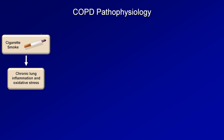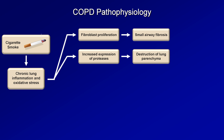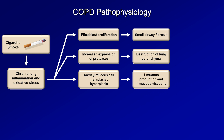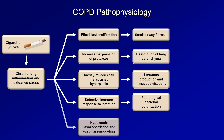First, there is proliferation of fibroblasts in the walls of the small airways — cells responsible for creating the extracellular matrix and structural protein collagen. When produced in excess, this leads to airway fibrosis and scarring. There is also increased expression of proteases, which destroy the lung parenchyma. Airway mucous cell metaplasia — in which mucous glands develop where they weren't previously present — and mucous cell hyperplasia, in which existing mucous glands increase in size, result in increased mucous production and viscosity. Defective immune response to infection leads to pathological bacterial colonization. Chronic hypoxemia leads to pulmonary vasoconstriction and vascular remodeling, resulting in pulmonary hypertension.